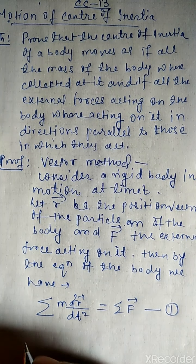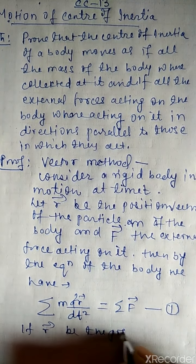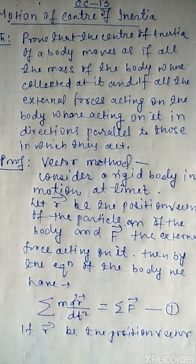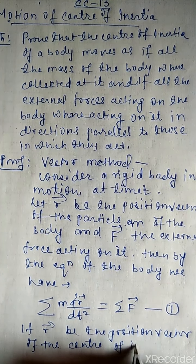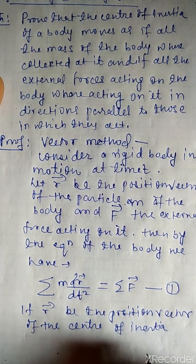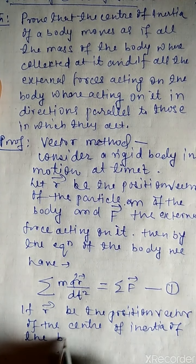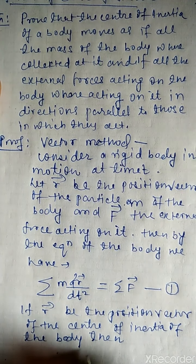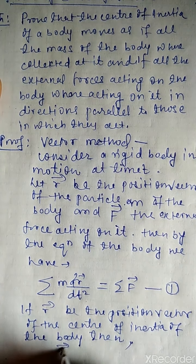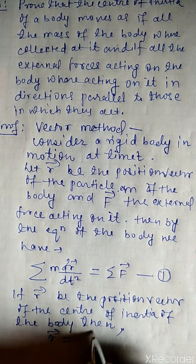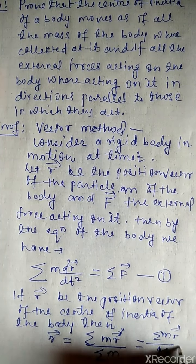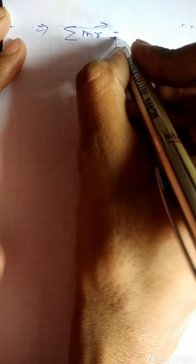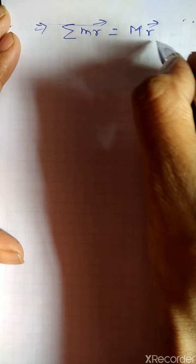If R be the position vector of the center of inertia of the body, then we have R = ΣmR / Σm, and this value is given as ΣmR / M. This implies the value equals capital M·R. Put this as equation number 2.